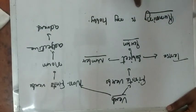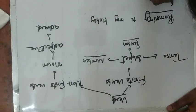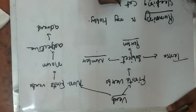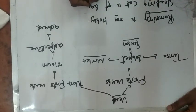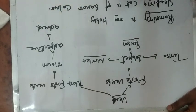As an adjective: 'Sleeping cat is of brown color.' Here 'sleeping' is a non-finite verb and it is used as an adjective.